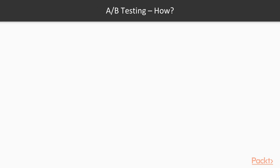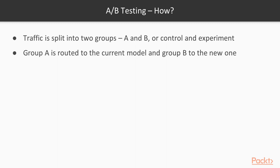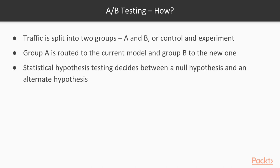And here we see, on a very high level, how A/B testing is done. You split the traffic into two groups, A and B, or control and experiment. Group A is routed to the current model and group B to the new one. Then you perform some statistical hypothesis testing to decide between a null hypothesis and an alternate hypothesis.